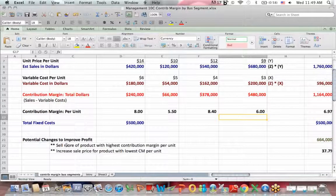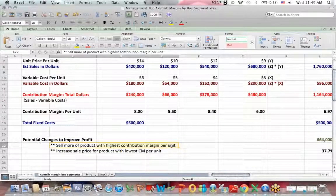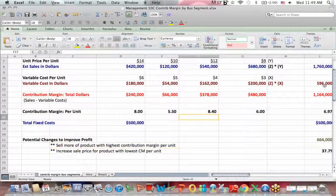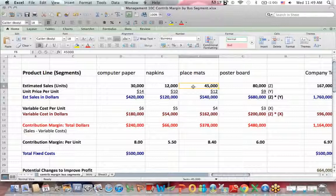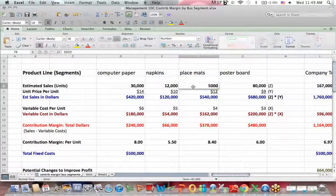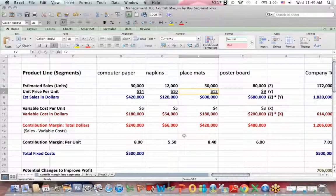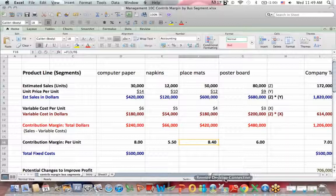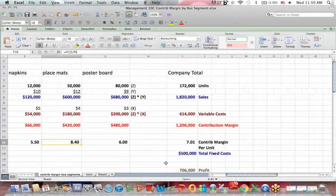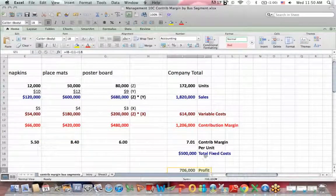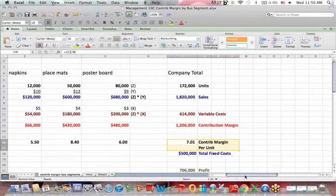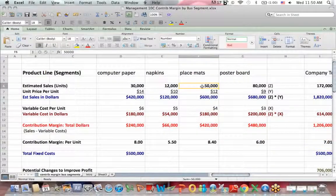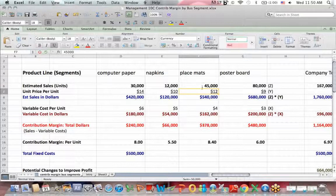And I list two ways here. The first is, I can sell more of the product with the highest contribution margin per unit, which happens to be placemats. So I could increase placemats from 45,000 to 50,000 units sold. And I would see that in total, my profit's now a little higher. My contribution margin per unit is a little higher. So I'm going to change placemats back to 45,000 just for now.